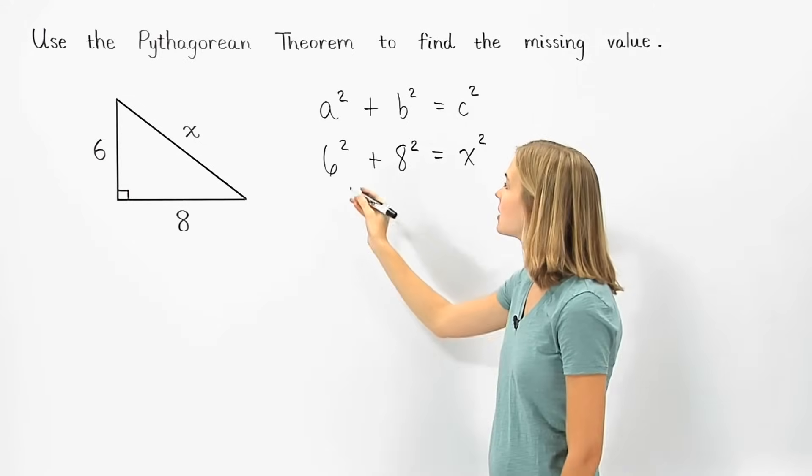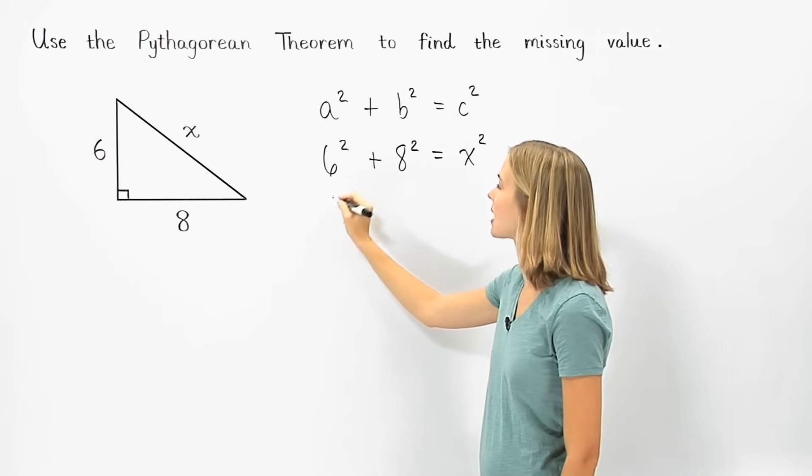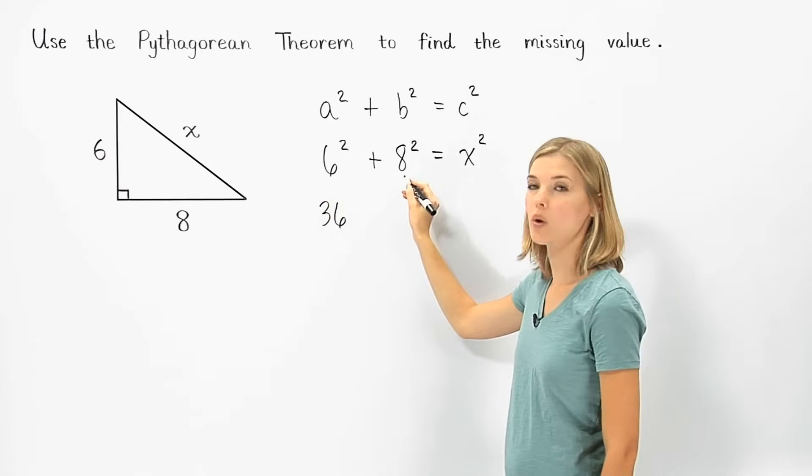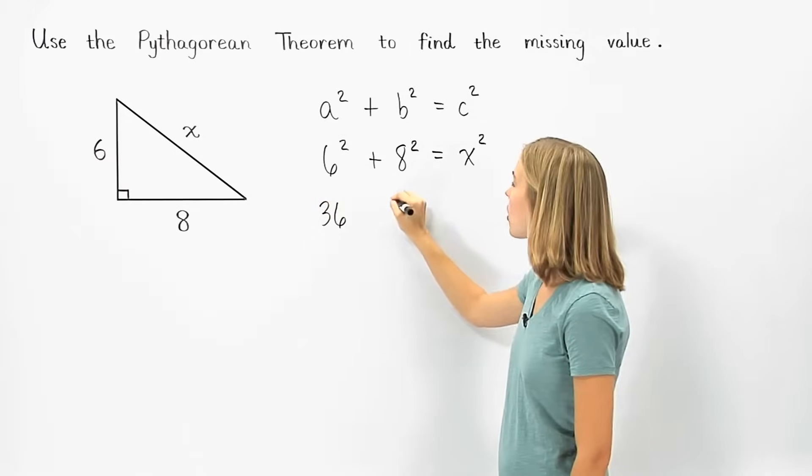Simplifying from here, 6 squared is 6 times 6, or 36, and 8 squared is 8 times 8, or 64.